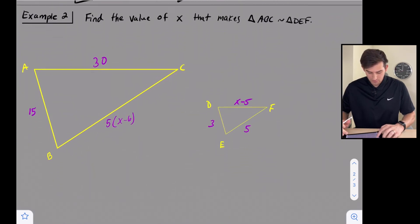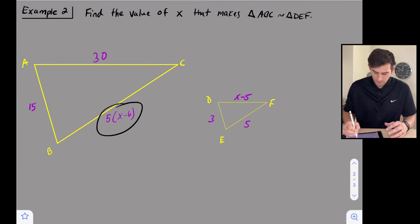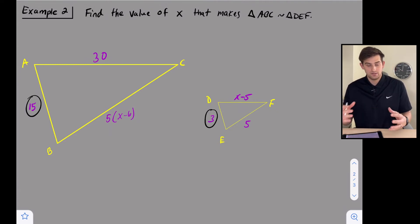Now let's look at example number 2. This one says find the value of X that makes triangle ABC similar to triangle DEF. So when we look at this, find out where your X is located - we have one here and we have one there.